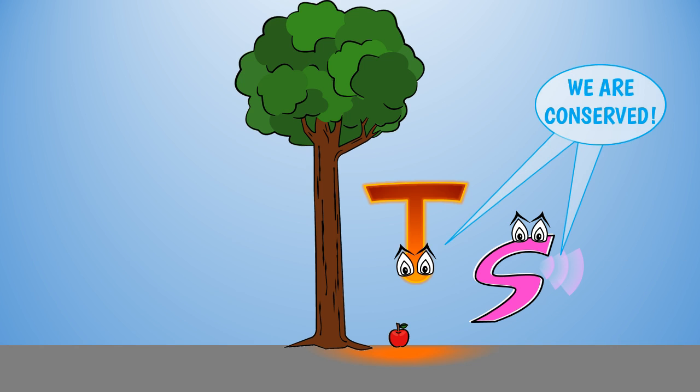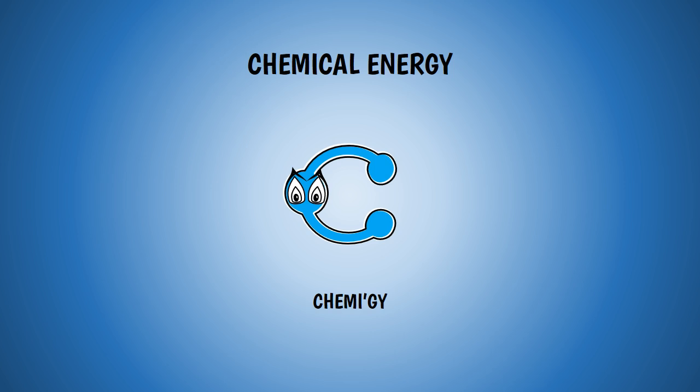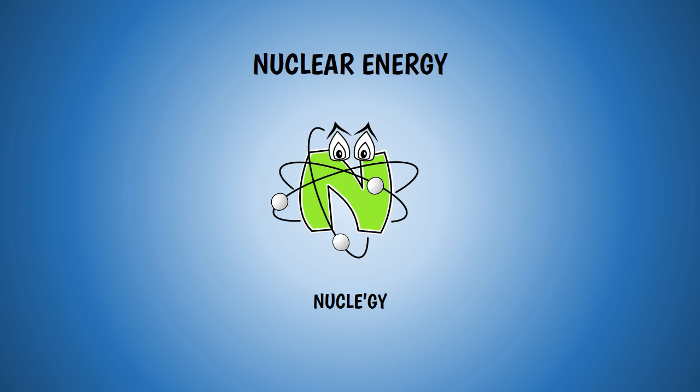Let's meet some more E.G.s. There's radiant energy — the energy of light. Chemical energy, that depends on the way the atoms that make an object are linked together. And nuclear energy, related to what happens in the nucleus at the center of each atom.